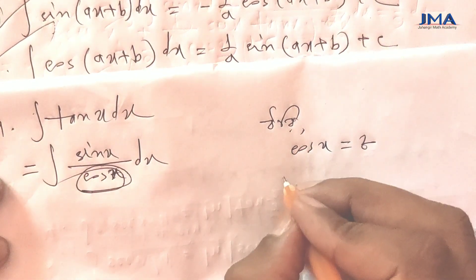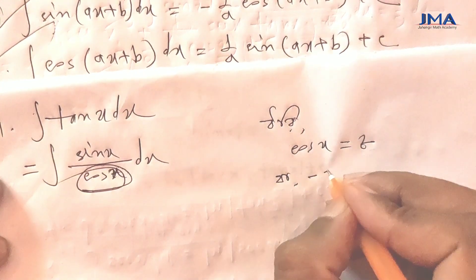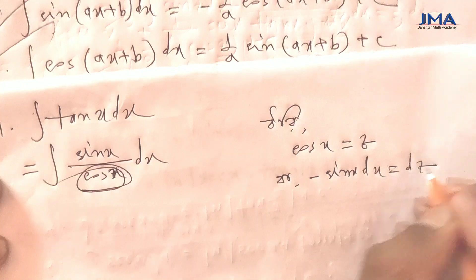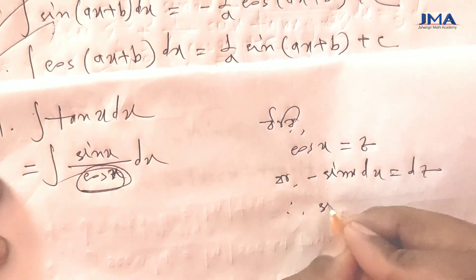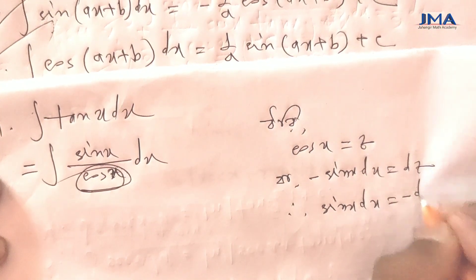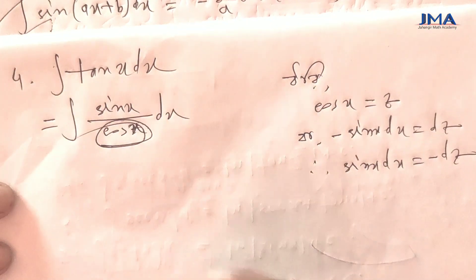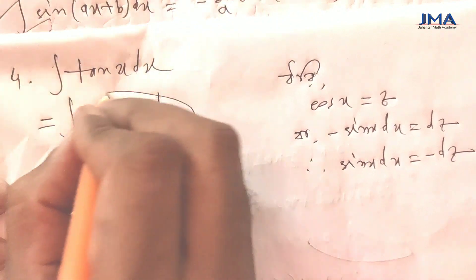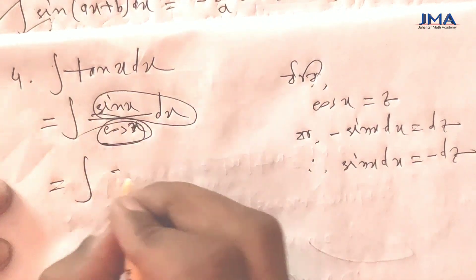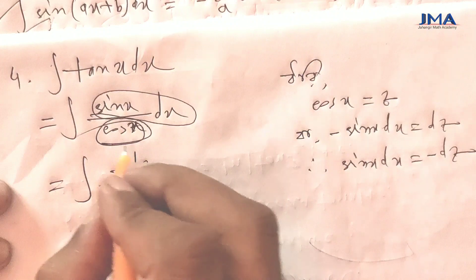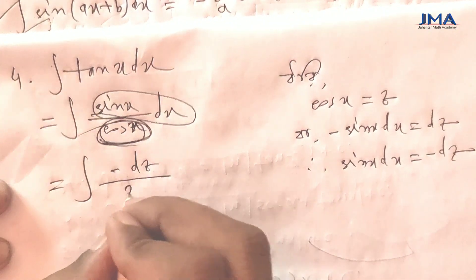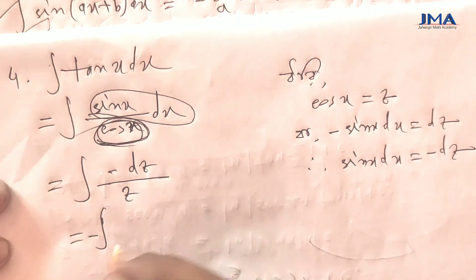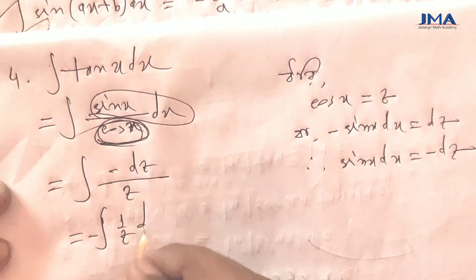Now, z is minus sin x, so dx is equal to dz. Sin x dx is equal to minus dz. So let's see — sin x dx is equal to dz, and cos x is equal to z. So: minus integration of 1 by z dz.